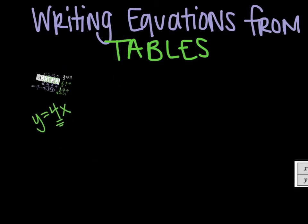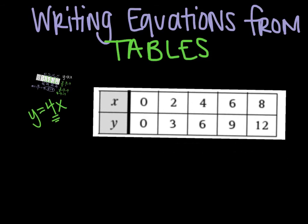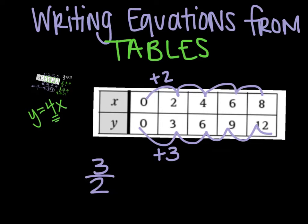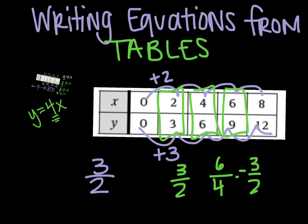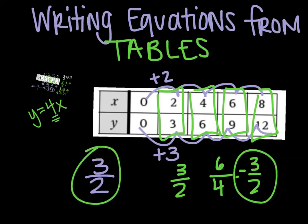We'll do another one. This one here. Again, you can do change in y over change in x. This is your change of 3, this is a change of 2. So change in y is 3 over x is 2. You could also do it your y over x. So 3 over 2 is just 3 over 2, 6 over 4 can be reduced to 3 over 2. Either way, you're going to get the same thing. That right there is what k is. k is 3 over 2. So then when I write my equation, it's going to be y equals 3 over 2 x.